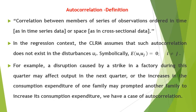Cross-section data also sometimes exhibits similar trends. For example, if we are dealing with data involving the regression of family consumption expenditure on family income, we find signs of a demonstration effect — that is, a rise in consumption expenditure of one family may very well prompt another family to increase its consumption expenditure. Here also we have a problem of autocorrelation.